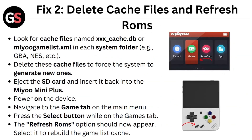Fix two: Delete cache files and refresh ROMs. Look for cache files named .cache.gp or .miyoogamelist.xml in each system folder. You need to delete these cache files to force the system to generate new ones. Select the SD card and insert it back into the Miyoo Mini Plus. Power on the device, navigate to the game tab on the main menu, and press the select button while on the games tab. The refresh ROM option should now appear — select it to rebuild the game list cache.